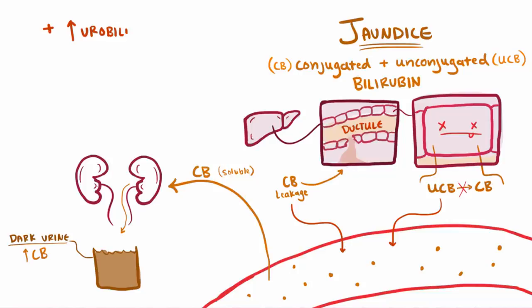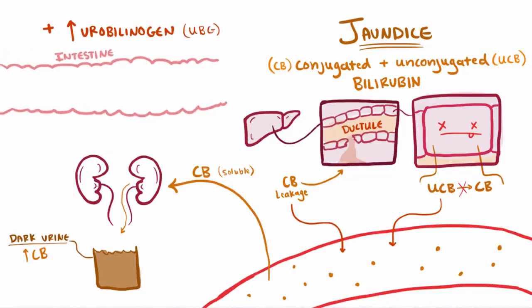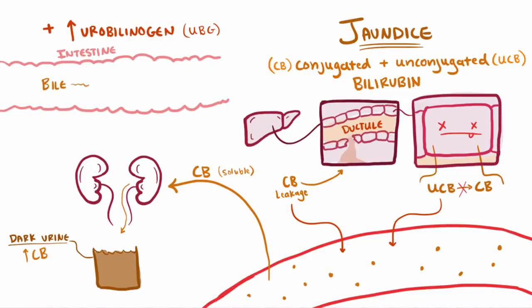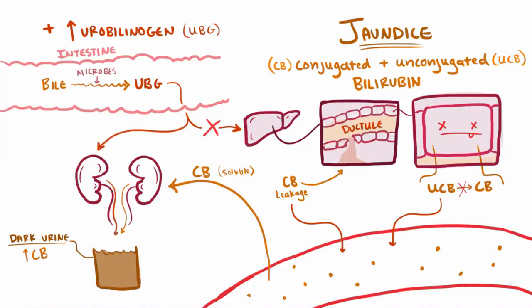Another common finding is increased urobilinogen in the urine. Urobilinogen is produced when bilirubin is reduced in the gut by intestinal microbes. Normally most of it is reabsorbed and transported back to the liver to be converted into bilirubin or bile again. But if these liver cells aren't working right, that urobilinogen is redirected to the kidneys and excreted, so you end up with more urobilinogen in the urine.